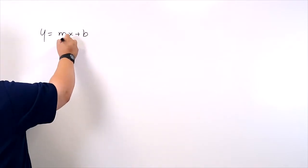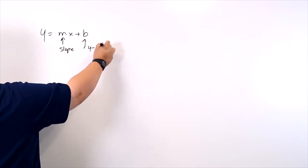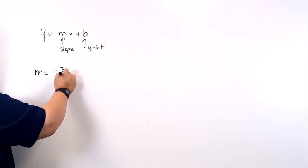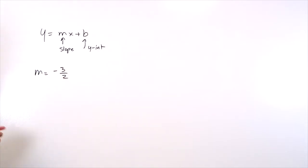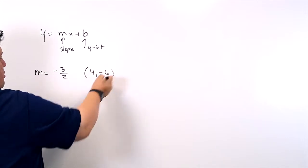So again, this is the slope. This is the y-intercept. So slope-intercept form. Let's say you have a slope of negative 3 over 2, something a little challenging. And let's say you had a point of 4, negative 6.